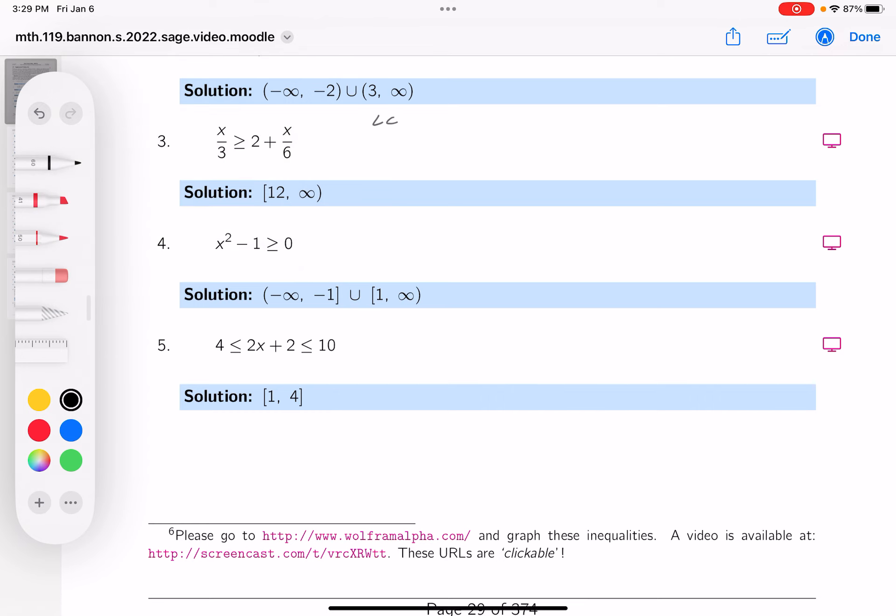The LCD here is six. Six is a positive number, no effect on inequality.